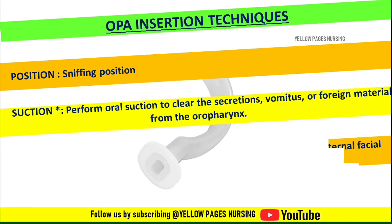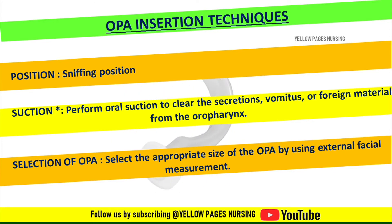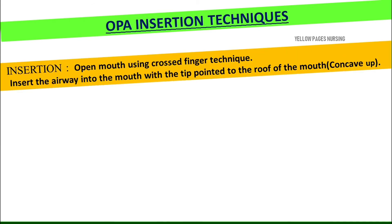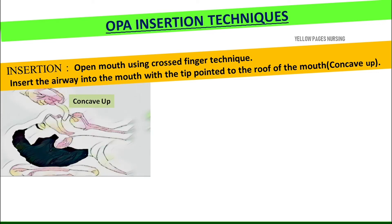Select the appropriate size of oropharyngeal airway using external facial measurements as discussed. To insert, open the mouth using the crossed finger technique. Insert the airway into the mouth with the tip pointed to the roof of the mouth — that is, concave up.